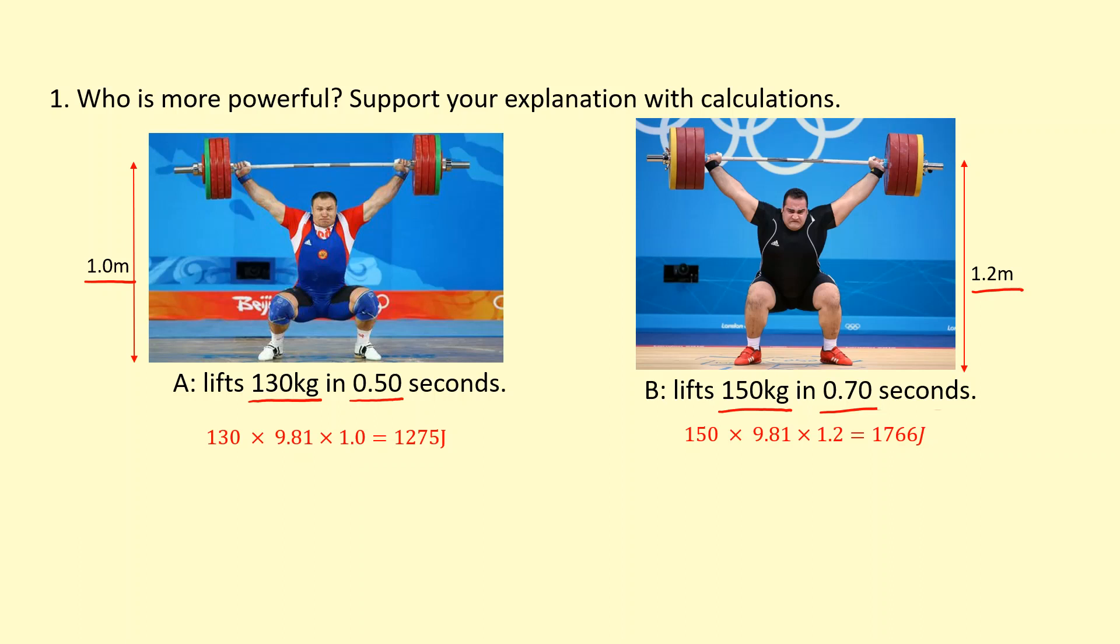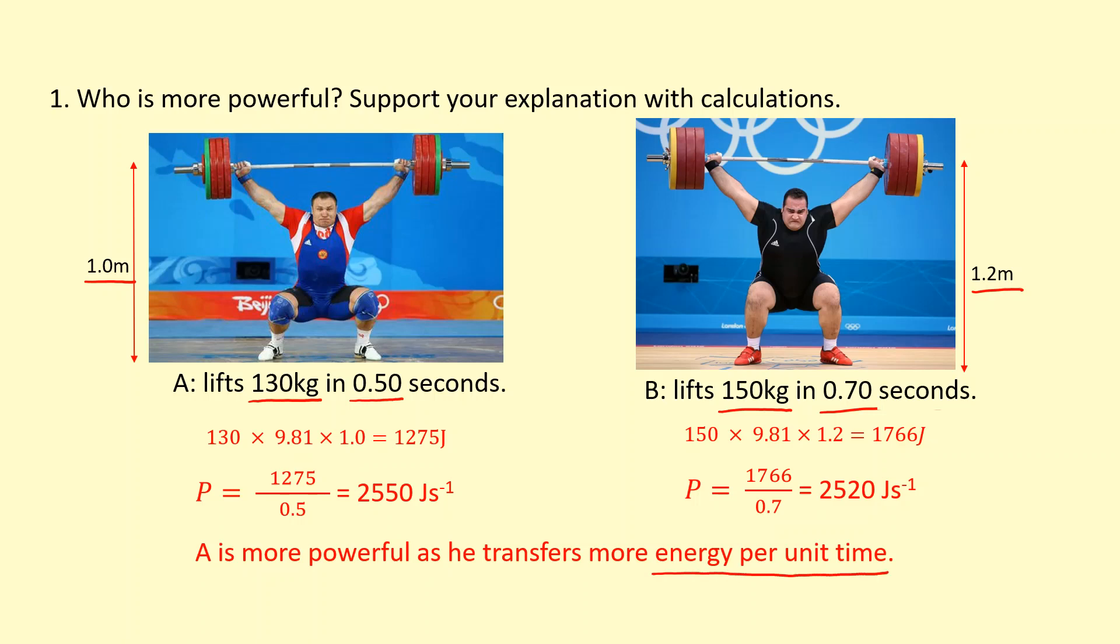However, power is about how quickly you transfer that energy. If we want to calculate how quickly the energy is transferred, we divide the energy by time. The guy on the left is transferring 2,550 joules per second, while the guy on the right is only transferring 2,520 joules per second. So it turns out the guy on the left is more powerful. That's because he's transferring more energy per unit time, which is what power is.